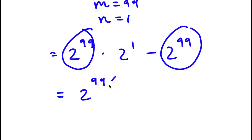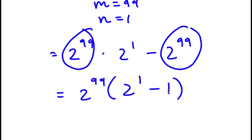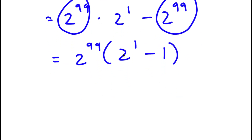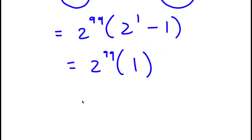So now I have 2 to the power of 99 times — well, 2 to the power of 99 times 2 to the power of 1 divided by 2 to the power of 99, all that's going to be left is 2 to the power of 1. And negative 2 to the power of 99 divided by 2 to the power of 99 is negative 1. So now this is equal to 2 to the power of 99 times (2 to the power of 1 is 2, 2 minus 1 is 1). And 2 to the power of 99 times 1 is simply 2 to the power of 99.